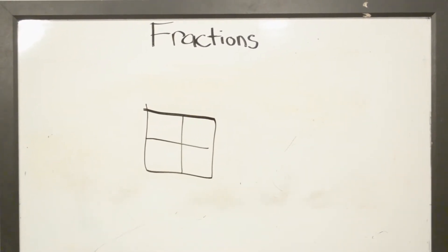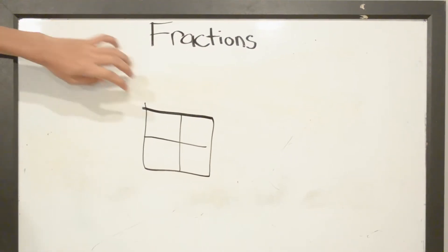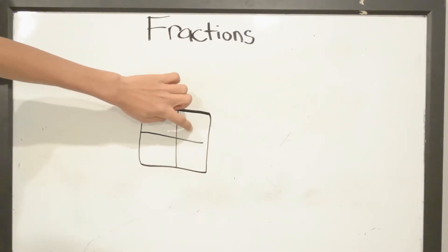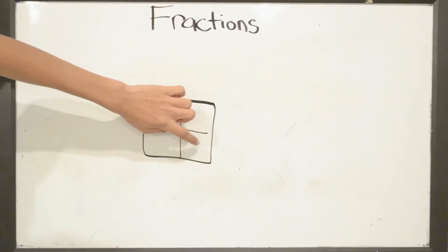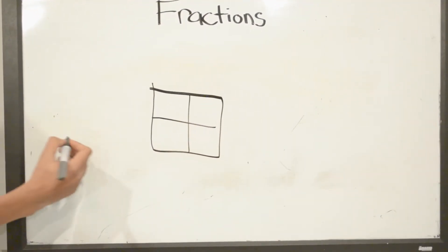The reason why our denominator is going to be 4 is because there are 4 parts: 1, 2, 3, 4. So right here we're going to write down 4.